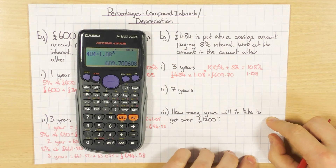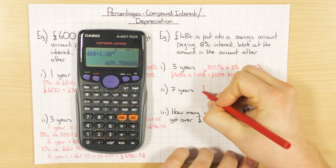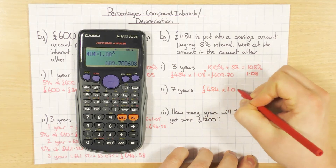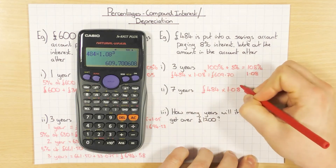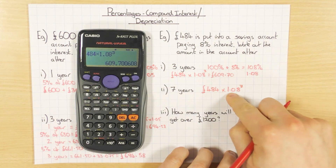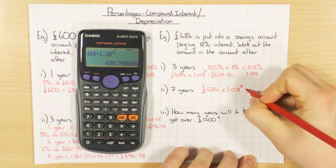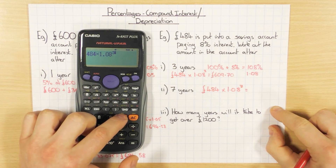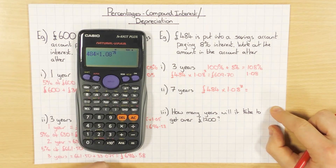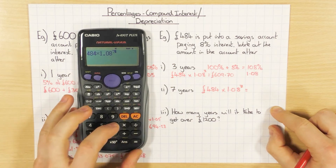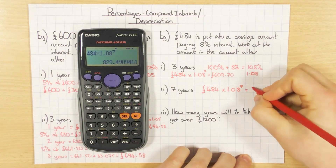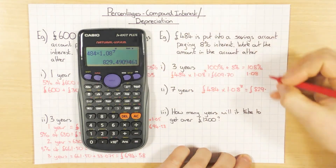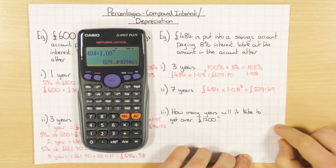And if I want to work out after seven years, I do 484 times my decimal multiplier 1.08, but this time to the power of 7, because I want to times by 1.08 seven times. I go back and change the power to 7, giving me £829.49.